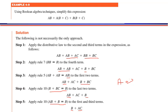Step number two mein hum ne rule number seven apply kiya ke BB = B, so we can write BB in terms of B. Baqi jo char terms hain woh isi tarah likhi jayengi. Step number three mein we apply rule number five: A + A = A. Yahan do terms hain AB + AB, toh answer bhi AB likha jayega — is tarah pehli do terms AB + AB se hum ne likh liya AB.